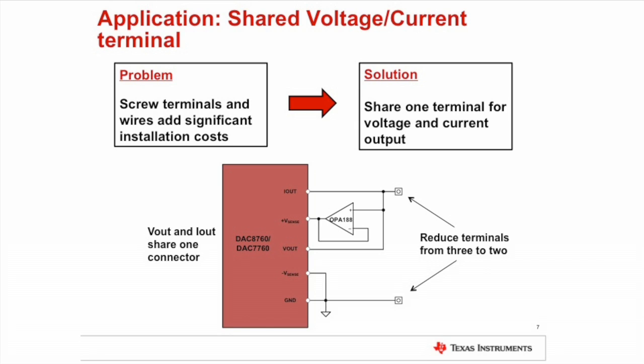A problem that system installers face is that wiring costs and the cost of components and terminals are very expensive. The DAC8760 family has a nice feature which allows them to save cost. The voltage and current pins of the device can be connected together and then connected to the terminal, so you can use one terminal and share the voltage and current output. Typically you have three terminals — voltage, current, and the return path — but with this device you just need one terminal, programmable by software, plus the return terminal. Reducing three terminals to two saves a lot of cost for system installers.